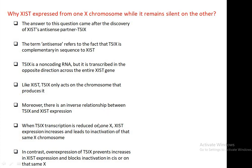Moreover, there is an inverse relationship between TSIX and XIST in their expression. When TSIX transcription is reduced on one X, XIST expression increases and leads to inactivation of that same X chromosome. In contrast, overexpression of TSIX prevents increases in XIST expression and blocks inactivation on that same X. In this way, XIST is expressed from one X chromosome but remains silent on the other. These two genes — XIST and TSIX — coordinately regulate the whole process of inactivation of one X chromosome in females.